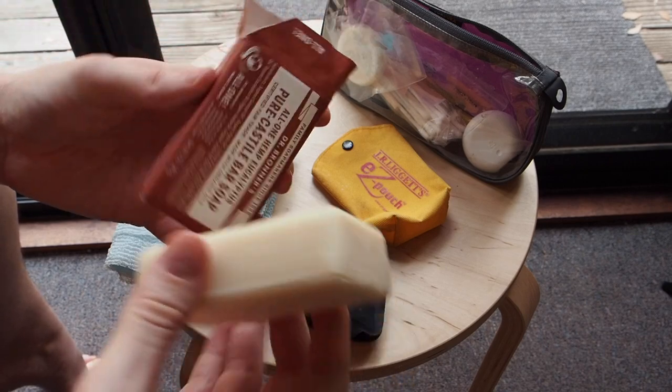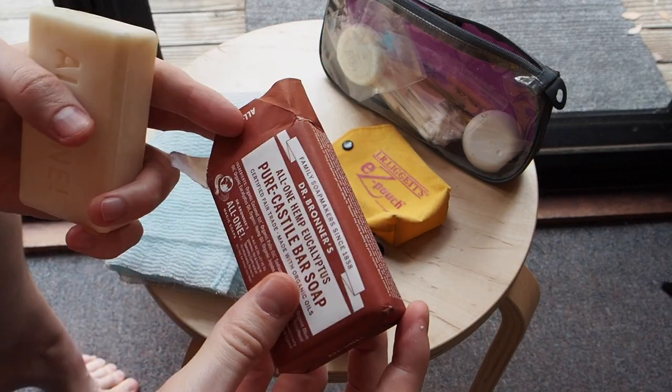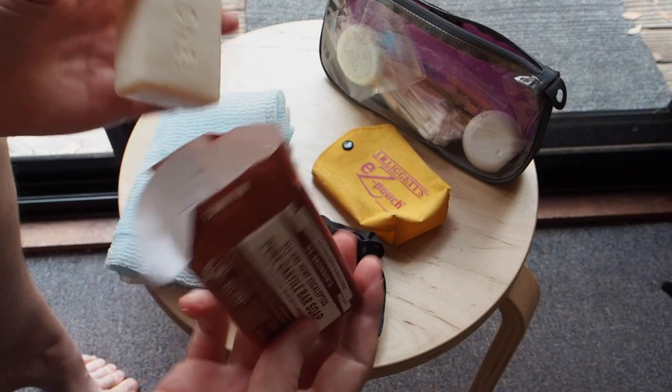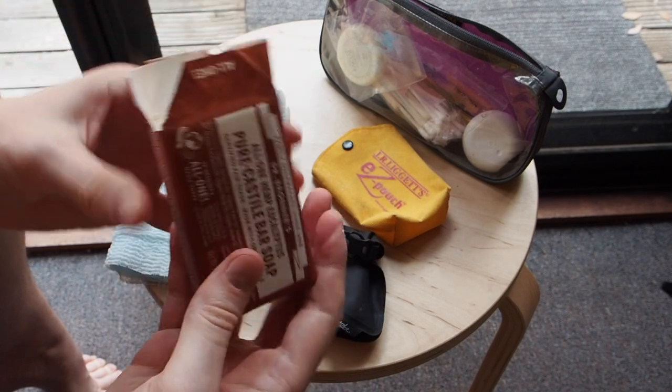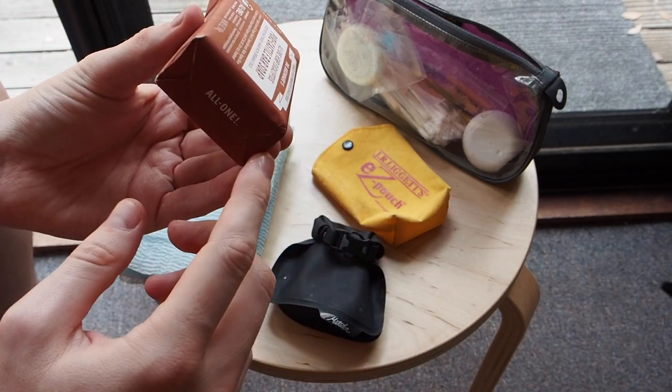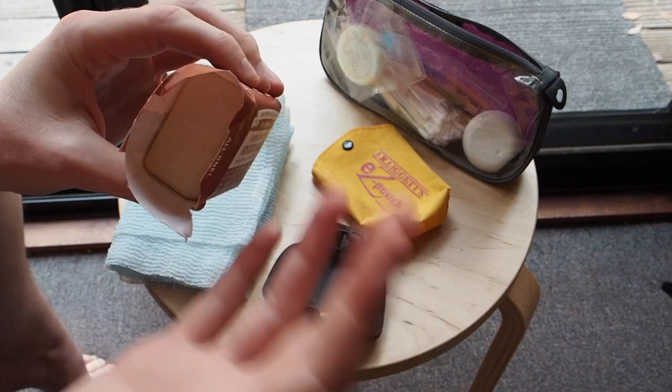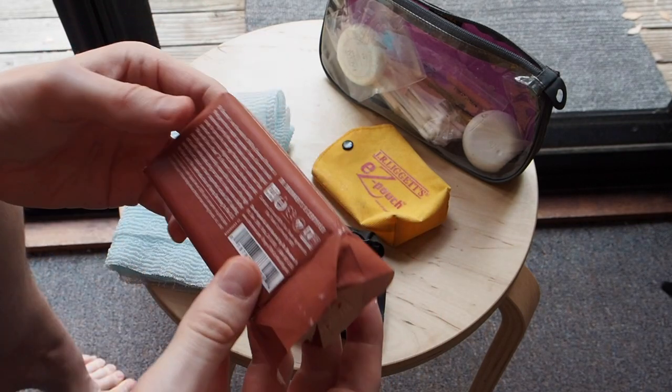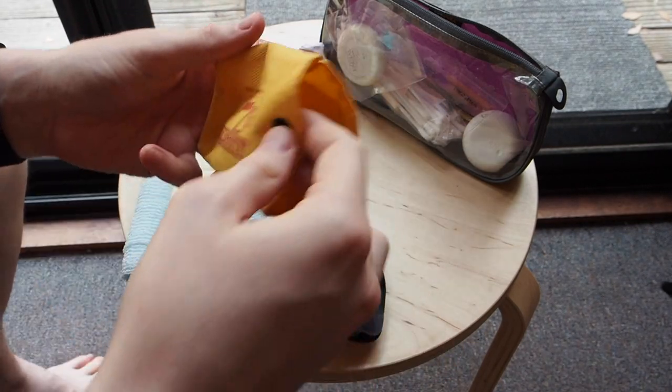Another method you could use is reusing the packet it came in. This is a waxed paper case here, and you could just pop the soap back into there after you've finished using it and it would drain out through the bottom, or you could allow it to dry and then put it in here. That could be another method to carry it.